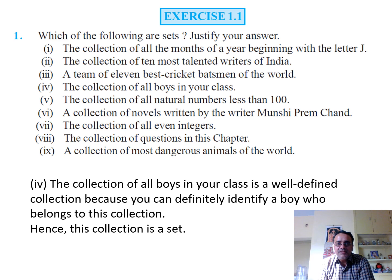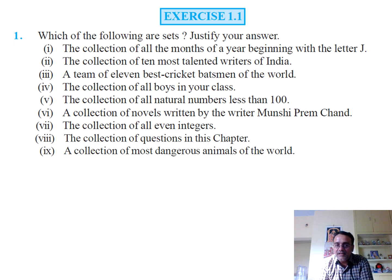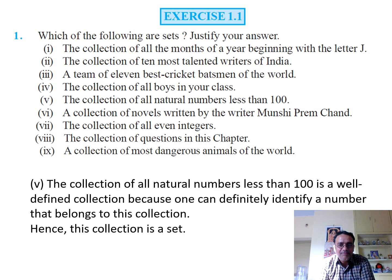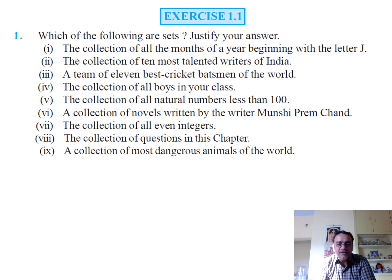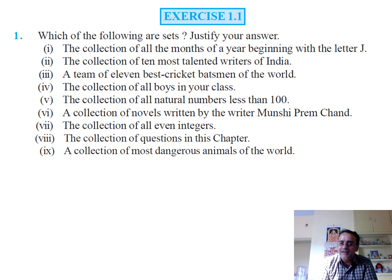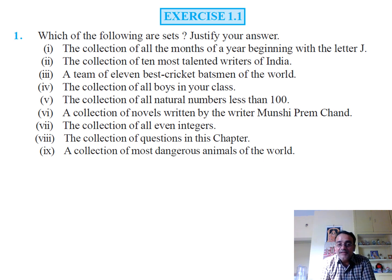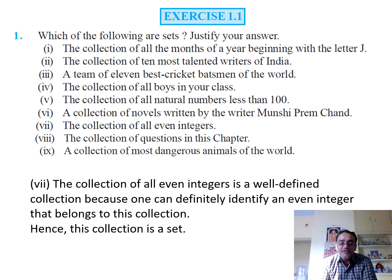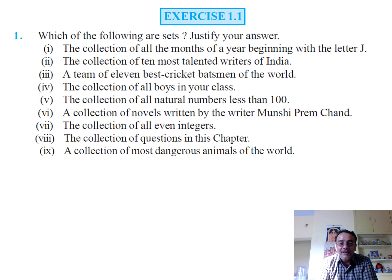The collection of all natural numbers less than 100 is a set, since the numbers 1 to 99 can all be clearly identified. A collection of novels written by Munshi Prem Chand is also a set, because those novels can be identified and collected. The collection of all even integers is a set, as you can always identify any even integer.